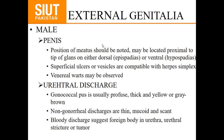Examination of external genitalia: in males, the penis should be examined. The position of the meatus should be noted — either on the dorsal side for epispadias or the ventral side for hypospadias. Superficial ulcers or vesicles may be present in herpes simplex; venereal warts may also be observed. If the patient presents with urethral discharge, gonococcal pus will be profuse, thick, and yellow or grey-brown in color, while non-gonococcal discharge is thin, mucoid, and scant. Bloody discharge is mostly due to foreign body in the urethra, urethral stricture, or tumor.